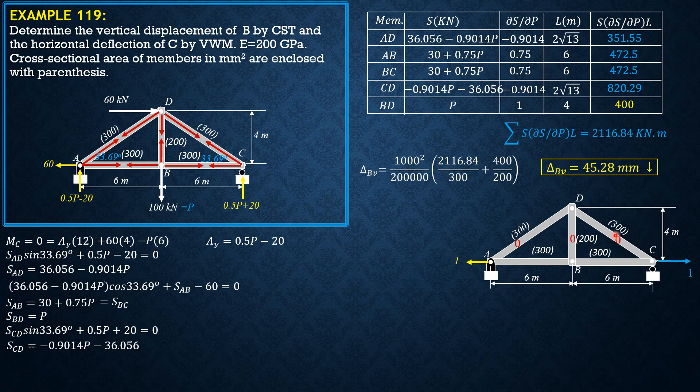So only members AB and BC will have a stress of 1 unit if we sum up forces horizontal. So UAB minus 1 equals 0, summation forces X at A.